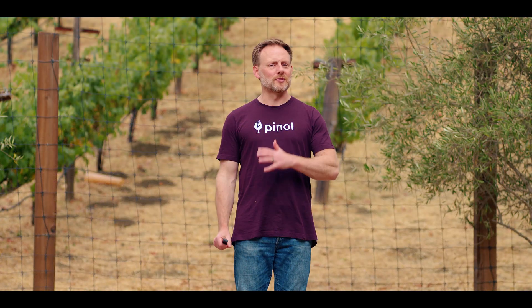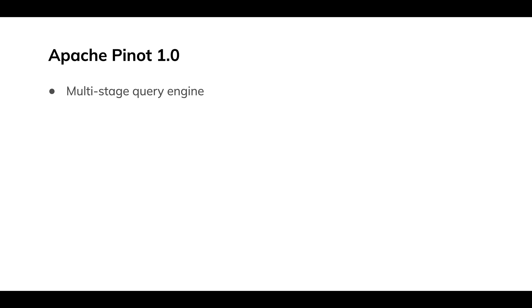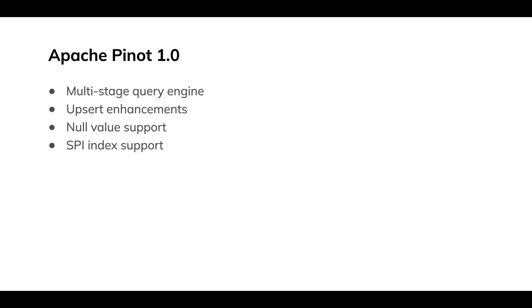Going 1.0 is always a story in itself — it's a huge milestone for any project. There are five main chunks of functionality I want to cover: the multi-stage query engine, which is a game changer; a number of enhancements in the way upserts work; some improvements in the way null values are processed; enhanced pluggability for indexes if you want to build your own index types; and a new connector for Spark 3.